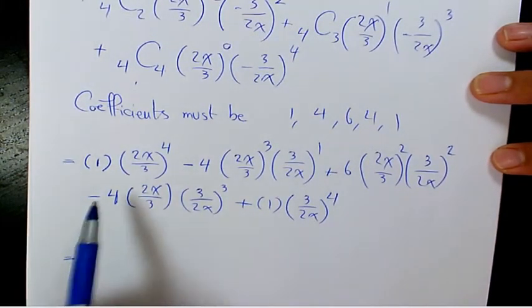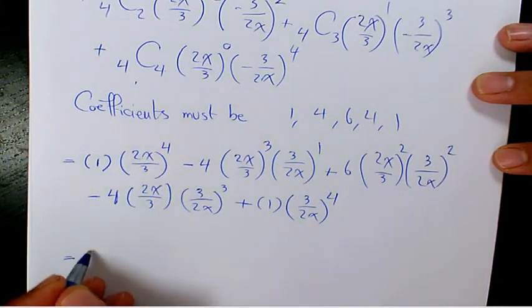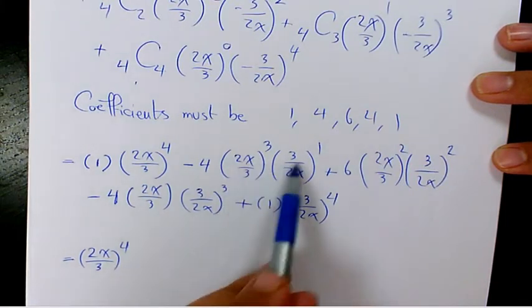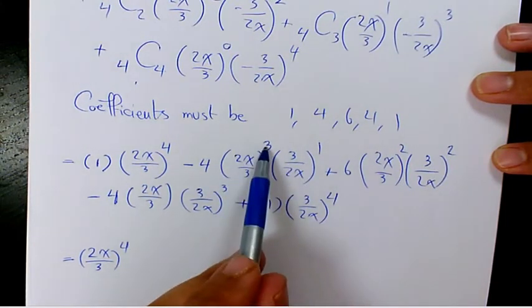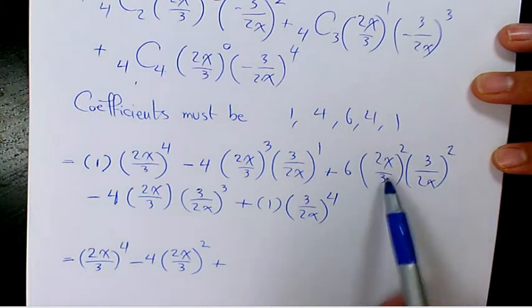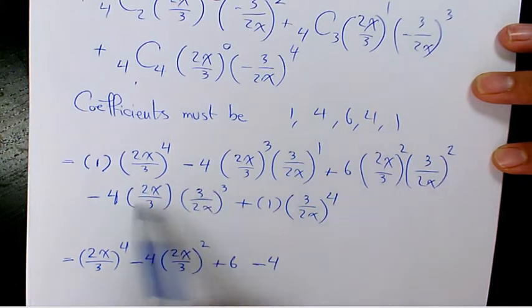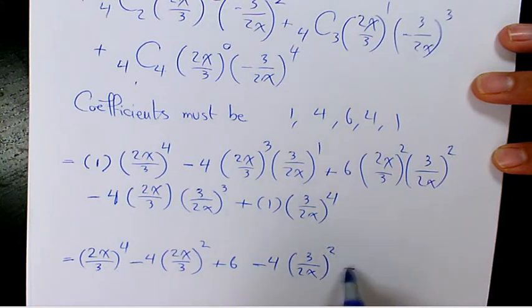So that's going to be 2x over 3 to the power of 4. Here these two cancel out and we're going to have only 2, so minus 4 times 2x over 3 to the power of 2. Plus, now these two cancel out we have only 6. This 3 with 1 cancel out, it's going to be only 2 there, and 3 over 2x to the power of 4.